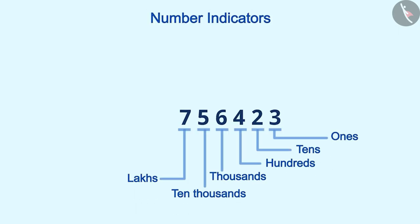While learning six-digit numbers, we had used some indicators. If we add one more digit to it, then we will get a seven-digit number. Similarly, by adding one more digit to it, we will get an eight-digit number.